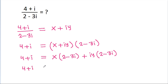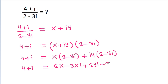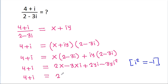Expanding: 4 + iota = 2x - 3x·iota + 2y·iota - 3y·iota². And since iota² = -1, the term -3y·iota² becomes +3y. So 4 + iota = 2x + 3y + (2y - 3x)·iota.